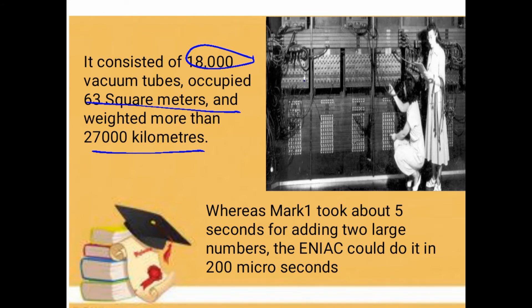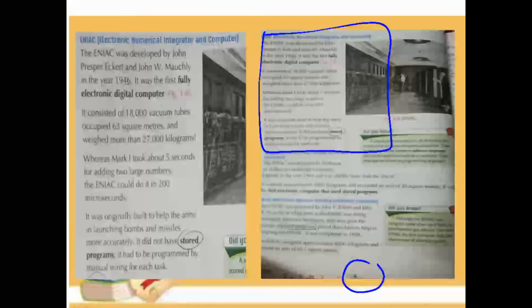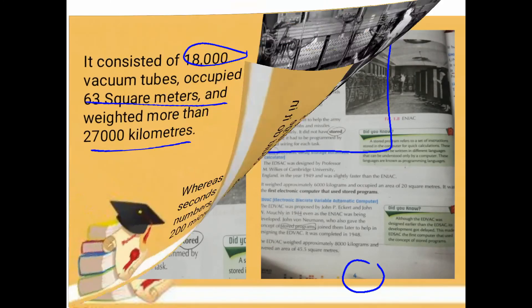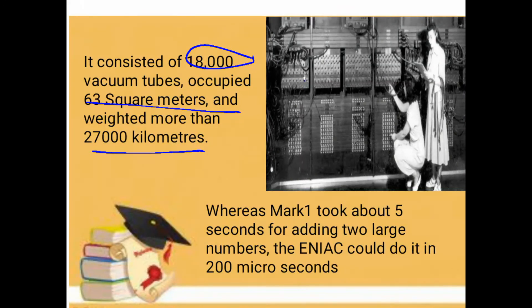Now comparing the two computers: Mark One is the first computer, and ENIAC is a little upgrade. Mark One took about five seconds for adding two large numbers. So for any addition problem, Mark One required five seconds to provide a result.